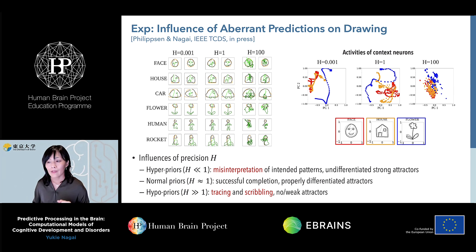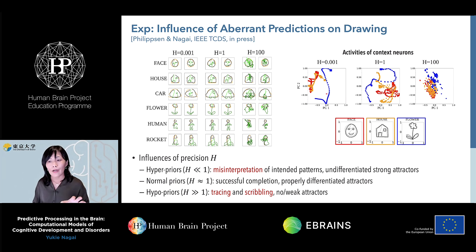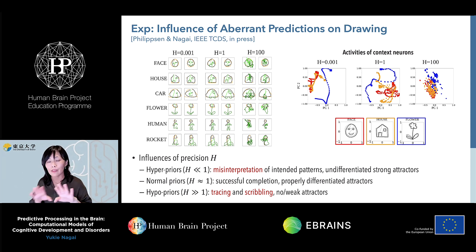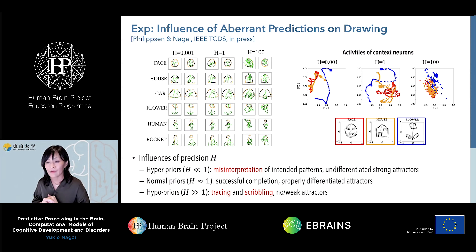Here are the results. Only the normal prior network was very successful in learning the desired drawing patterns, whereas the hypo prior and hyper prior networks were not so successful. Analyzing internal representations, only the normal prior network acquired a well-structured representation for different drawing patterns. The hypo prior network misinterpreted the intended patterns — strong overlap between two patterns indicates misinterpretation — while the hyper prior network showed no structured representation at all, explaining why it was unsuccessful in drawing.